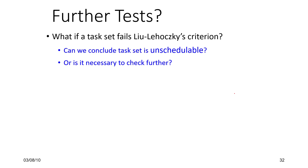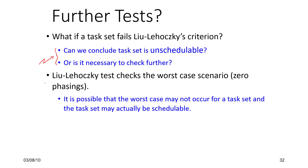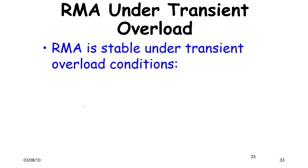If a task set fails Liu-Layland's criterion, many of these issues are discussed in detail in Liu-Lehocsky's paper published in 1989. What I have shown is a simpler version of their test; their actual test is slightly more complex and is if and only if — both necessary and sufficient. Liu-Lehocsky's test checks the worst case under zero phasing, so it is possible that zero phasing may not occur and the task set may actually be schedulable in ways that the test will not capture.